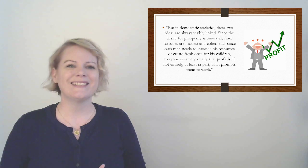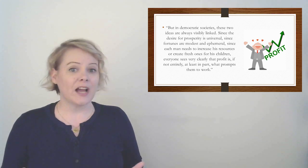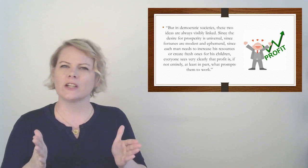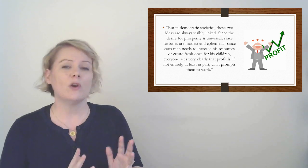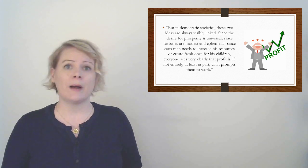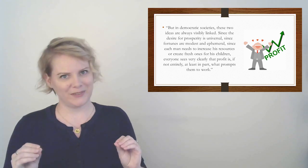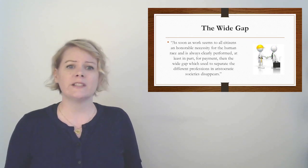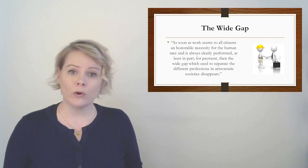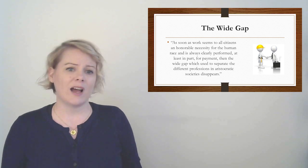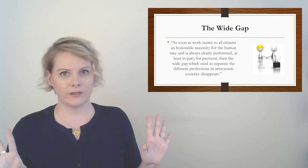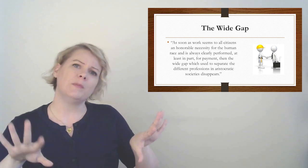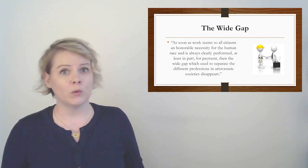Thus, the idea of profit remains separate from that of work. It is no use knowing that they are an actual fact joined, because tradition keeps them apart. So in the French aristocracy, it was okay if you had a job. Like, you could be part of parliament or raise race horses or something. But you shouldn't be obsessed with earning money. That would be super tacky. But in America. But in democratic societies, these two ideas are always visibly linked. Since the desire for prosperity is universal. Since each man needs to increase his resources or create fresh ones for his children. Everyone sees very clearly that profit is, if not entirely, at least in part, what prompts them to work. So Americans are not embarrassed about their desire for profit. They are only interested in profit. They love profit. In part, because they want to take care of their children. But in part, because there's just no shame in loving profit. As soon as work seems to all citizens as an honorable necessity for the human race. And is always clearly performed. At least in part for payment. Then the wide gap, which used to separate different professions in aristocratic societies, disappears.